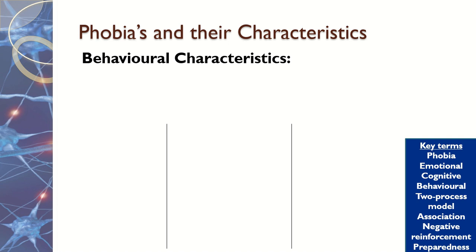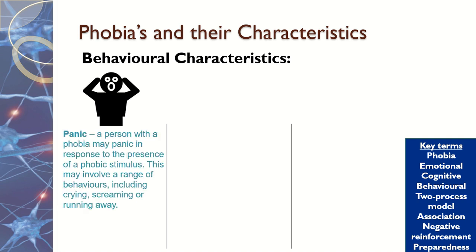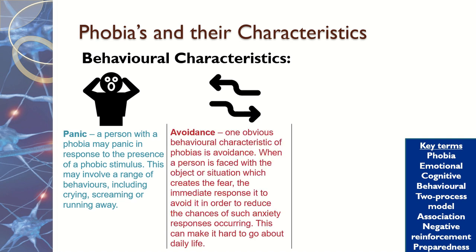There are three behavioural characteristics — these are actions, behaviours that we show. The first is panic. Children or adults might scream or cry. Children especially often tend to freeze or cling to someone because they can't cope.